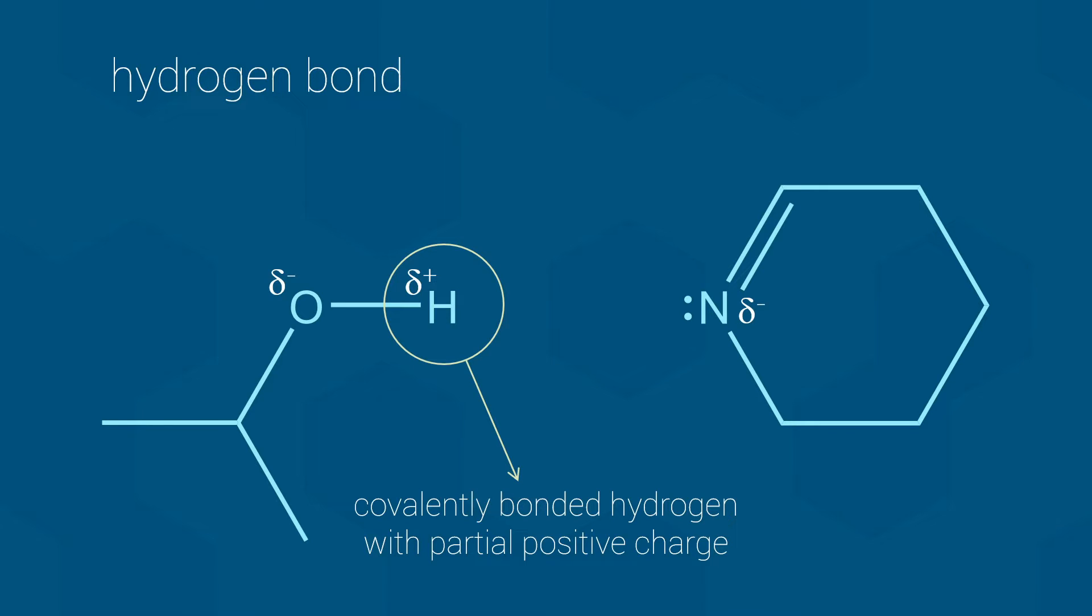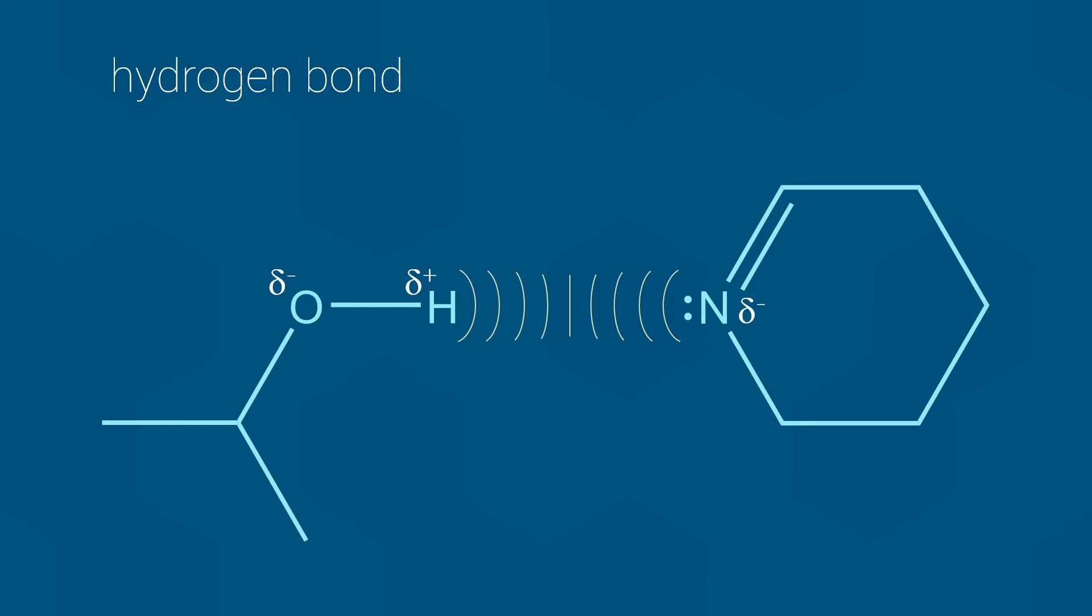The final required feature is that the other electronegative atom, in this case the nitrogen, has a free lone pair of electrons. The result is that the hydrogen atom and its partial positive charge are attracted to the lone pair of electrons on the partially negative atom.